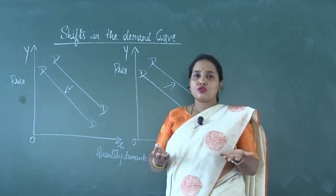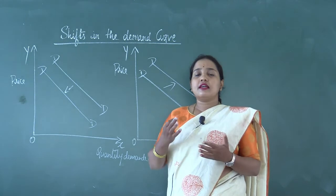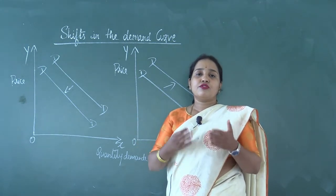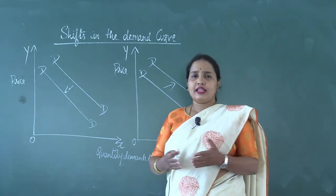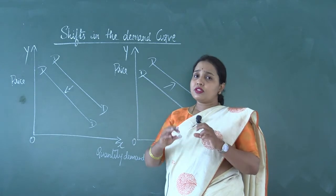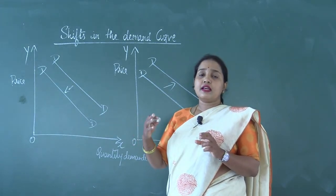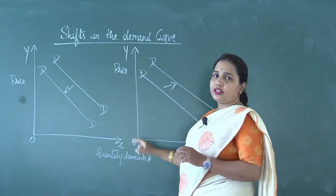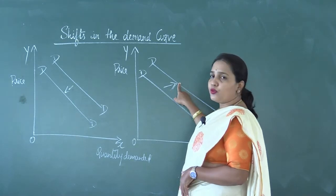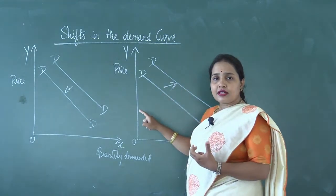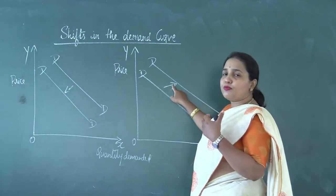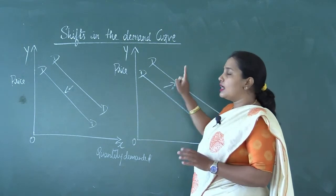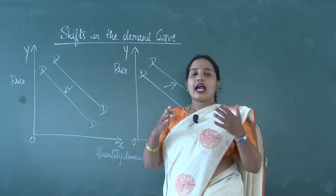Normal goods are those goods for which, whenever the consumer's income increases, the demand for such goods increases. Examples include fruits, vegetables, clothes, and all daily-used commodities. Whenever the income of the consumer increases, the demand for normal goods shifts rightward, because when the consumer's income increases, he tries to buy more and more of such goods. That is why the demand curve takes a rightward shift.